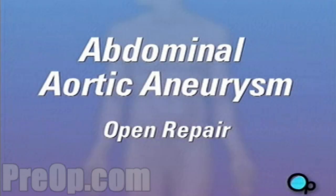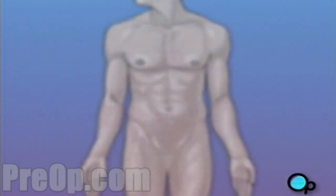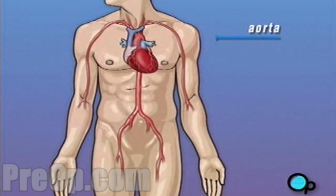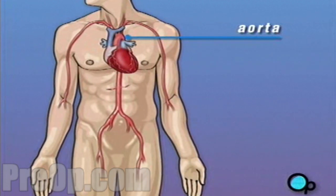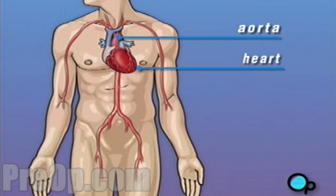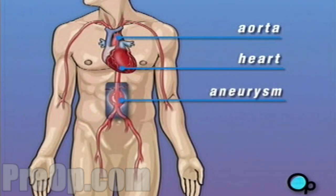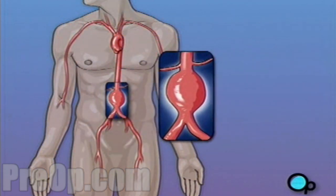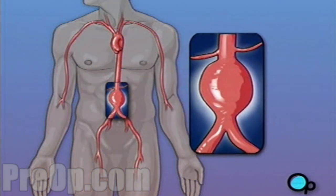Your doctor has recommended that you have surgery to treat an abdominal aortic aneurysm, but what does that actually mean? The aorta is the main blood vessel that carries oxygen-rich blood from your heart to the organs in your body. An aneurysm is a bulge or swelling in a blood vessel. This type of bulge occurs when a blood clot develops in the aorta, causing it to expand.